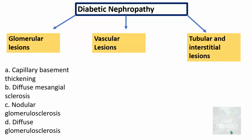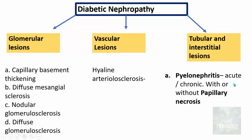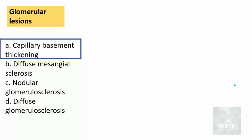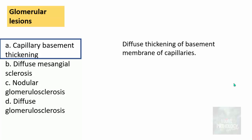The glomerular lesions include capillary basement membrane thickening, diffuse mesangial sclerosis, nodular glomerulosclerosis, and diffuse glomerulosclerosis. Capillary basement membrane thickening occurs through the receptor-mediated and non-receptor-mediated mechanisms we discussed — the result is diffuse thickening of basement membrane of the glomerular capillaries seen on histology. Diffuse mesangial sclerosis occurs because of increased synthesis of extracellular matrix proteins, seen as PAS-positive deposits in the mesangium.